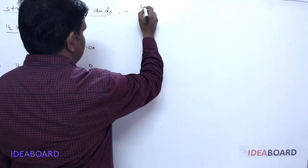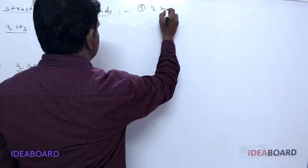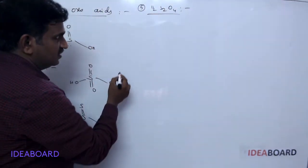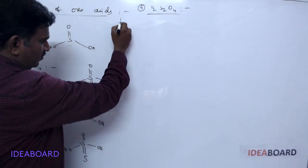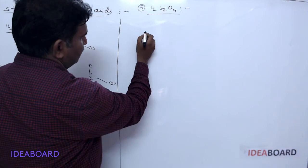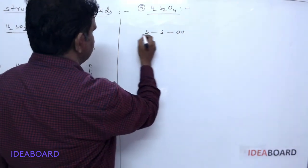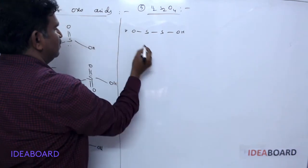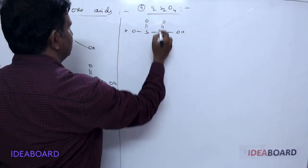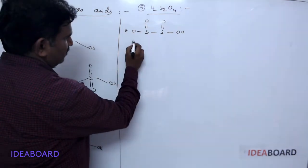The fifth structure is H₂S₂O₄, called dithionous acid. The dithionous acid structure is drawn with S single bond S, two OH groups, and the remaining two oxygen atoms — one oxygen on each sulfur atom.